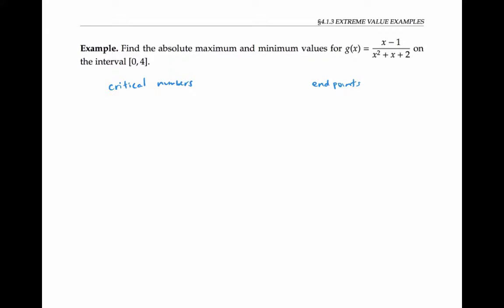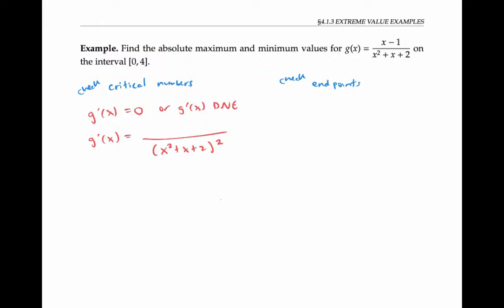So we'll need to check the critical numbers and check the endpoints and compare our values. To find the critical numbers — those are the numbers where g prime of x is equal to zero or does not exist — let's take the derivative g prime of x using the quotient rule. We get x squared plus x plus two, all squared, on the denominator, and then we have low times d-high; the derivative of the numerator is one, minus high times the derivative of the denominator, that's two x plus one.